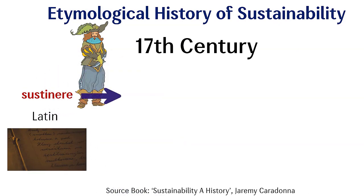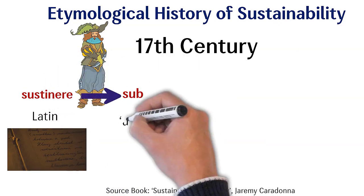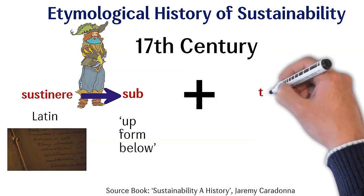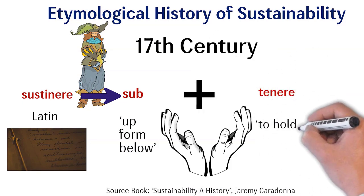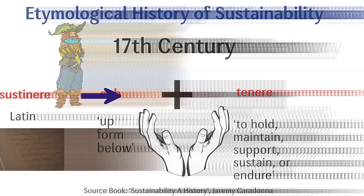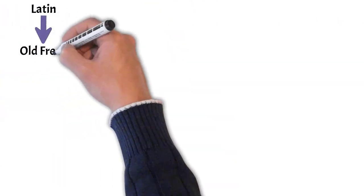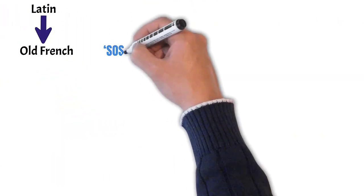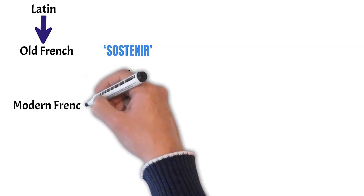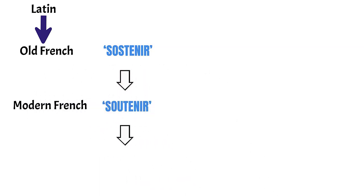Which is combination of sub, means up from below, and tenere, which means to hold, maintain, support, sustain, or endure. From Latin, the word came to Old French sustainer and modern French as soutenir. From here it came to English as a verb to sustain.